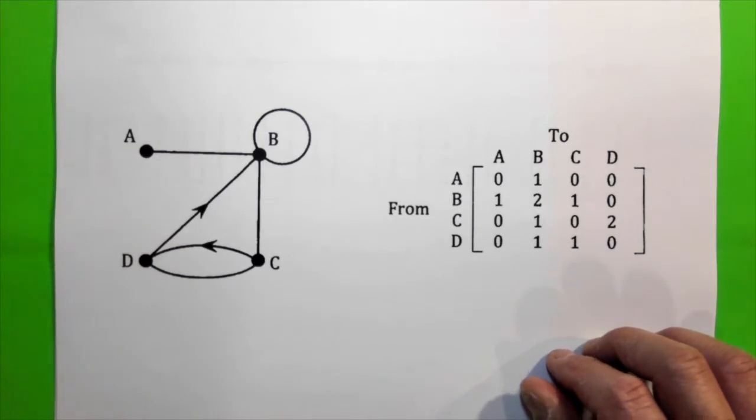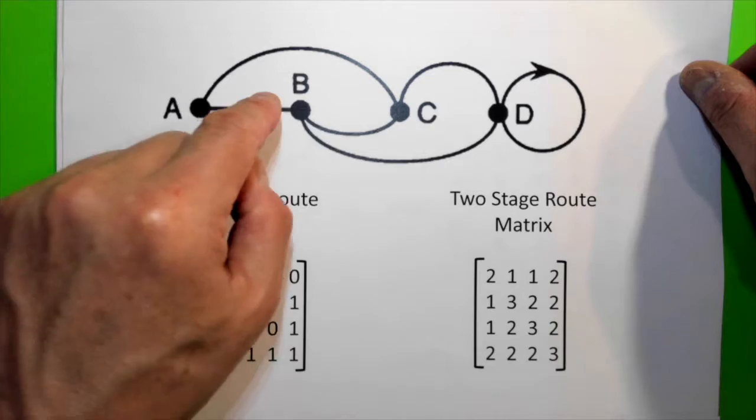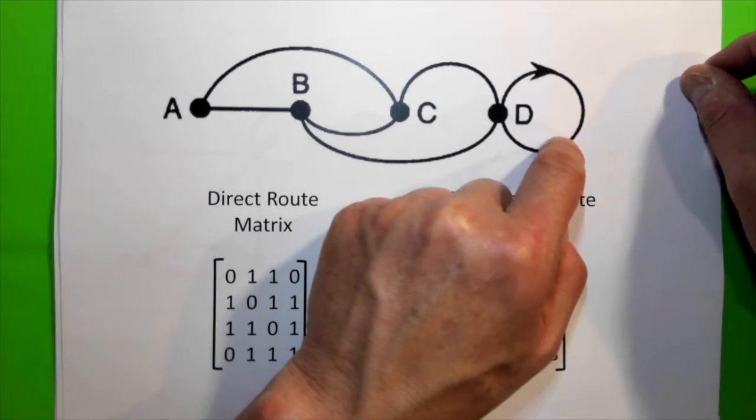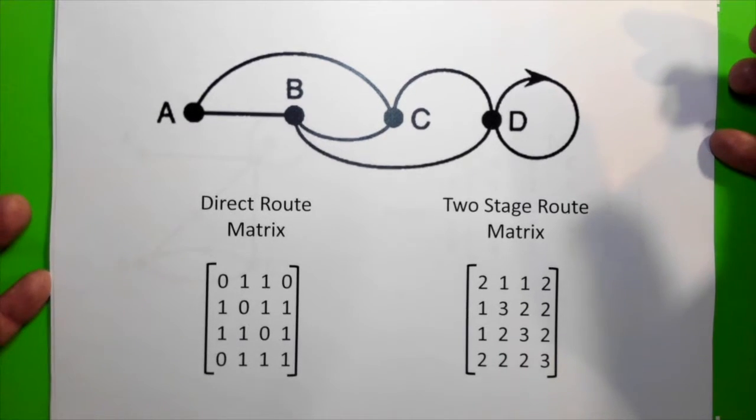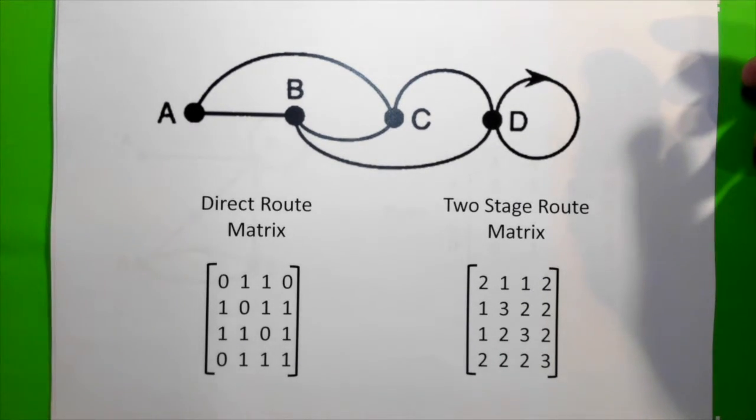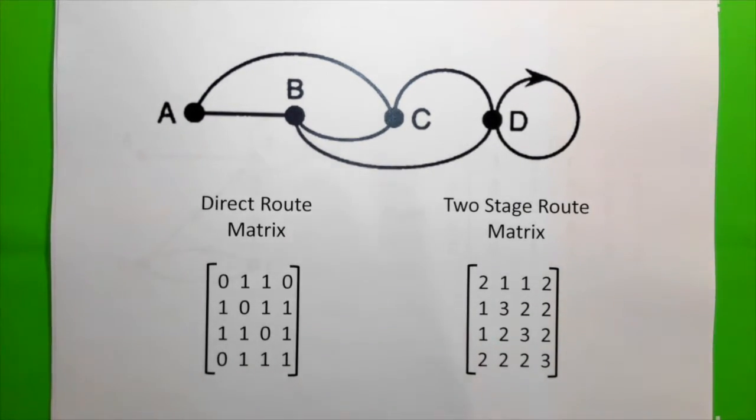What I would like you to do is to pause for a while, have a look at this matrix here, and actually work out the direct route matrix and the two-stage route matrix. These are the answers, but I would like you to pause and just look at that before you look at the answer.